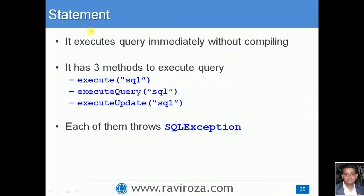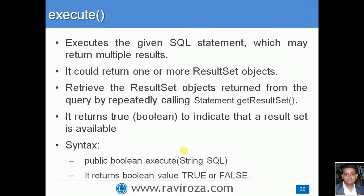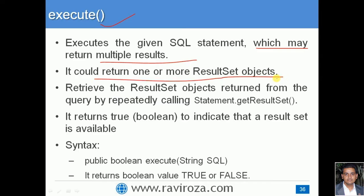The execute() method executes a query immediately without compiling it. It executes the given SQL statement which may return multiple results — meaning you are writing a query that may be returning data from multiple tables or objects. It can return one or more ResultSet objects, referred to as a multiple set of results. To retrieve the ResultSet objects returned from the query, you repeatedly call the statement's getResultSet() method.